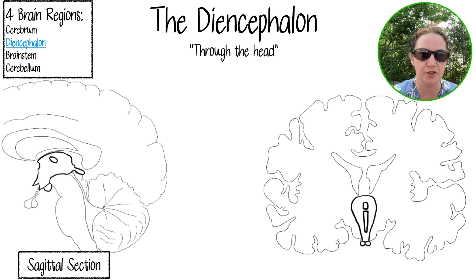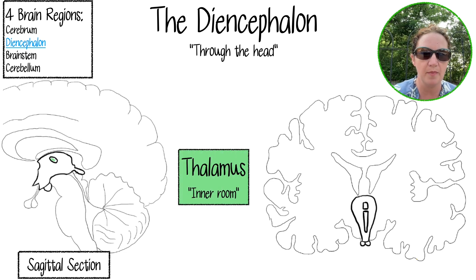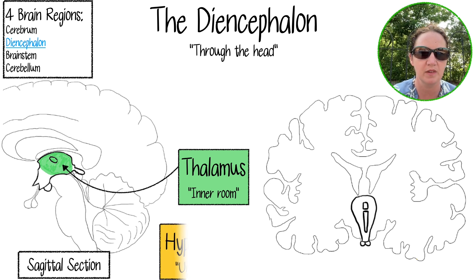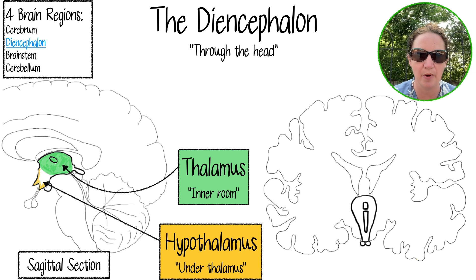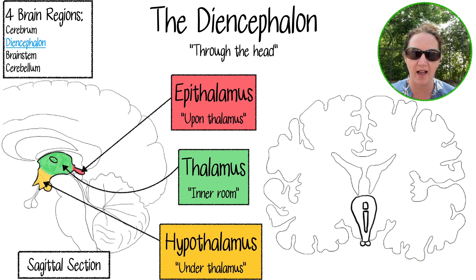This picture on the left side of your screen is a sagittal section of the brain — as if it's been cut down the middle, with a right side and a left side. You're looking at the right side of the brain. The thalamus is in the very center of the brain and the very center of the diencephalon region. It literally means 'inner room,' and it actually has two sides connected with a little bridge. Underneath the thalamus is the hypothalamus — that word means 'under the thalamus.' And on the back, or upon the thalamus, is the epithalamus. So you can see all three parts in a sagittal section.